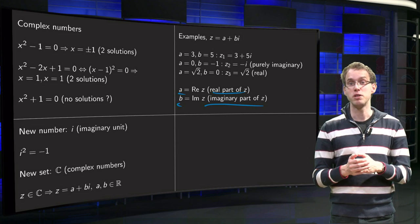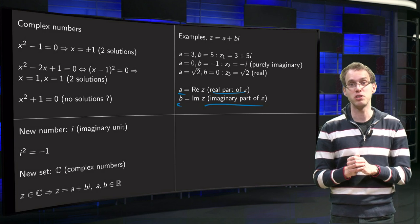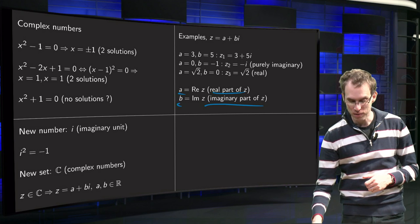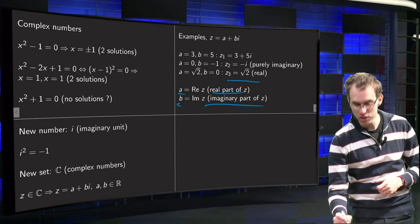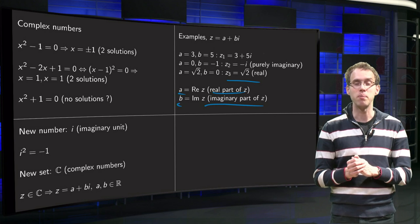We can also put, of course, the b equal to 0. b is a real number, so it can be any number, we can also set it to 0, and set for example a to square root of 2, then we get z equals square root of 2, so 0 times i. Hey, but that is just a real number.